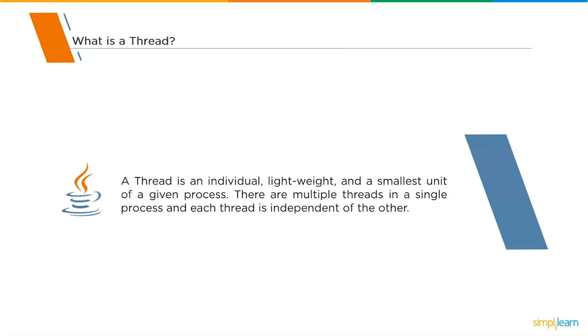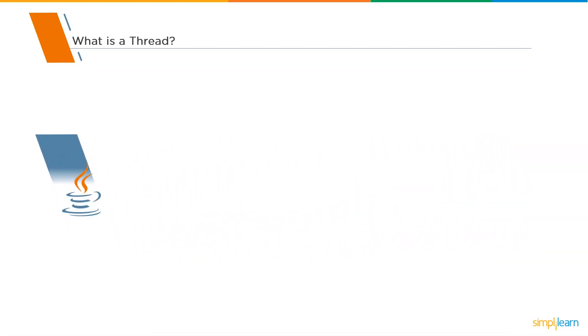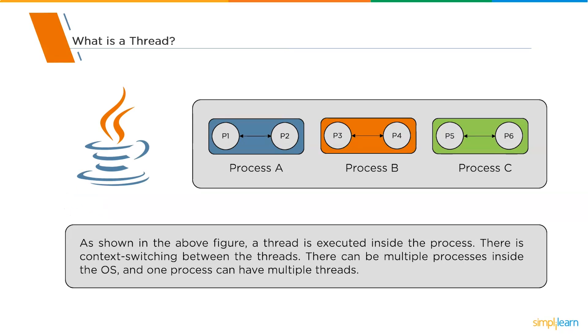Now after the definition, we will understand a little more about the thread. Basically, threads are interdependent. Sometimes you may have to switch between one process to another process or you might have to switch between one thread and another thread. As shown in the above figure, the thread is executed inside the process and there is context switching between the threads. There can be multiple processes inside the operating system and one process can have multiple threads as well.